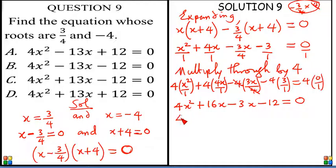And the middle terms, those middle terms are like terms. 16x and minus 3x. If we work on both of them, we are going to have plus 13x from them. Plus 13x minus 12 is equal to 0. So this conforms to option C.